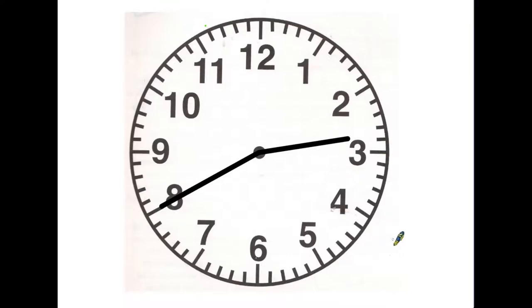Now if the large hand were pointing down to the six that would be half past or thirty minutes past. Once we go past the six we change the way we say the time. So if we look at the situation here where the large hand is at the eight, instead of counting how many minutes past two, in this case because we have gone past the six here we actually count how many minutes there are to the next hour.